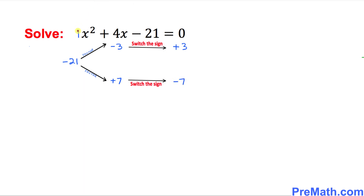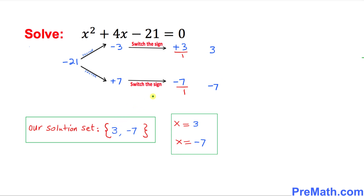Finally, we look at the leading coefficient, which is 1, and divide both numbers by 1. Simplifying gives us positive 3 and negative 7. So our solution set is positive 3 and negative 7, written in both notations.